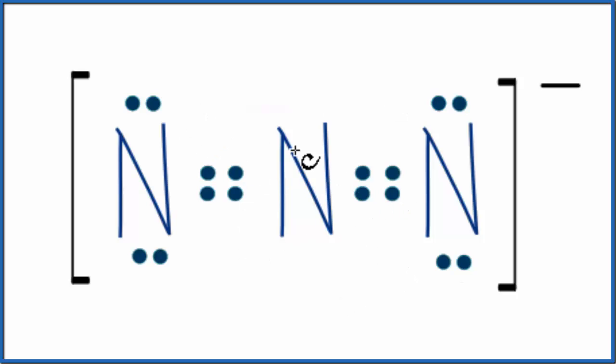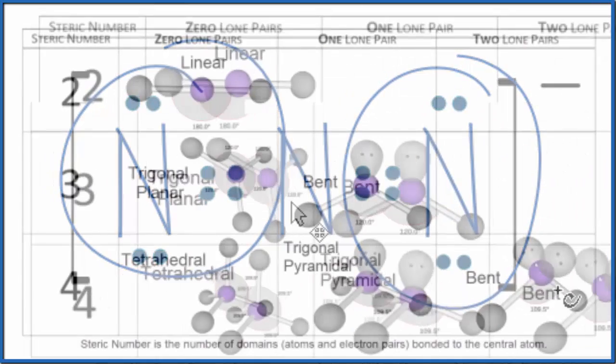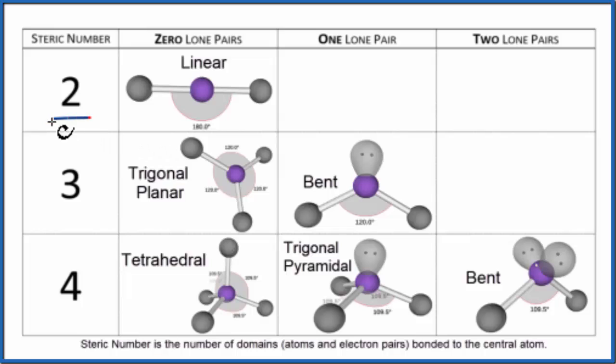The first is we can look at the steric number. So the central nitrogen has one, two things attached to it. So if we look at our chart here, we have a steric number of two, we have no lone pairs. So we have a linear molecular geometry. The bond angle here, because it's in a line, is 180 degrees.